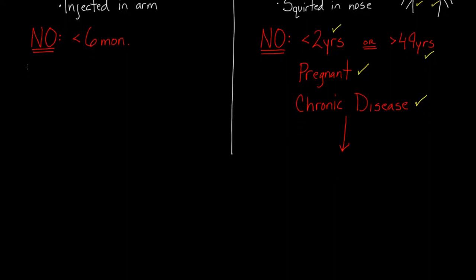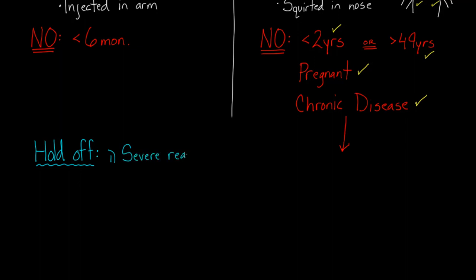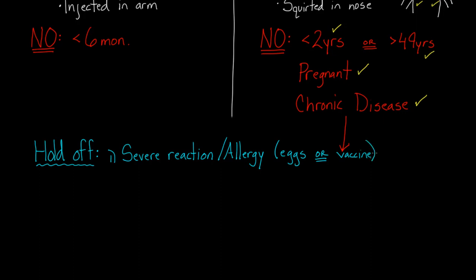Whenever giving vaccines, there are a few questions I always want to ask. If answered a certain way, I'll hold off on giving the vaccine. One group — and this might sound obvious — is someone who's had a severe or allergic reaction to the vaccine in the past. I'd want to clarify what happened, but if they didn't respond well either to the vaccine itself or to eggs — because the vaccine is made using eggs — I'm going to hold off on giving the vaccine.